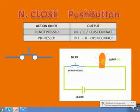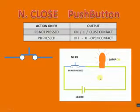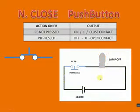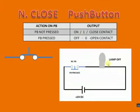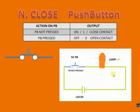When you press the push button, the path will go off. You can see the supply goes off and the lamp is off. When you release the push button it shows ON again. So this is the normally closed push button type.